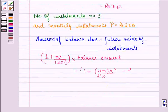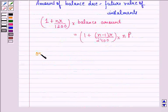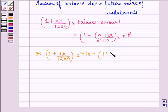So we can say (1 + 3R/1200) × 760 = (1 + 2R/2400) × 3 × 260.